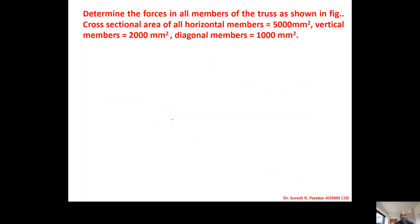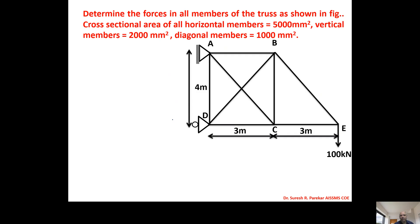Determine the forces in all members of the truss as shown in the figure. The cross-sectional area of all horizontal members is 5000 mm², vertical members 2000 mm², and diagonal members 1000 mm². Now we have to find both DSE and DSI and then decide whether the truss is internally or externally indeterminate.